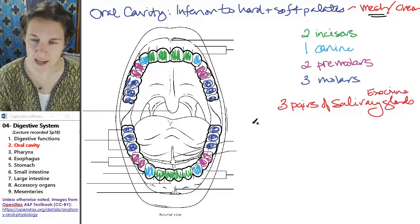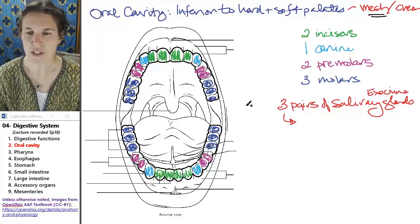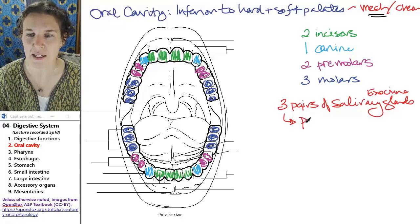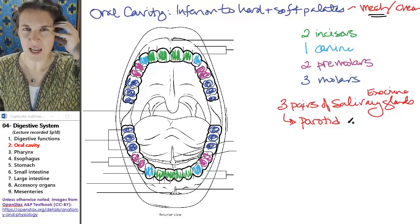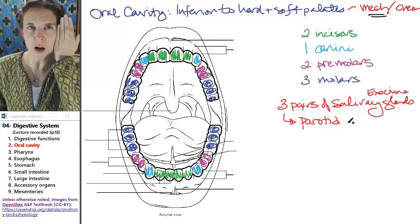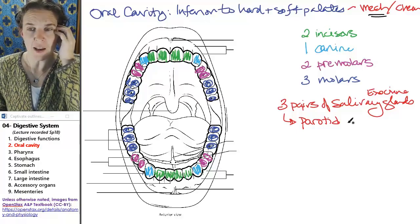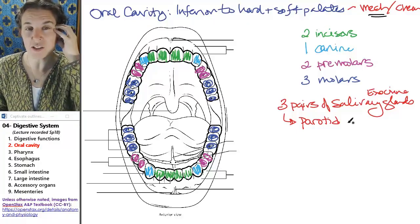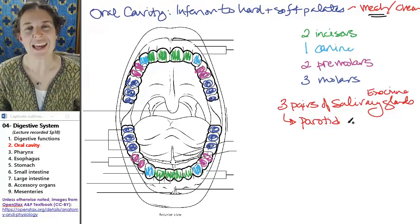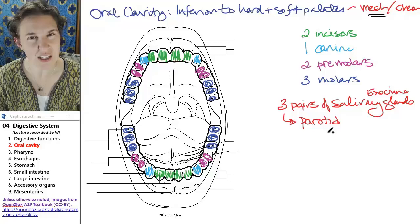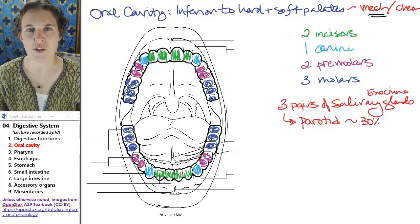And these exocrine glands come in pairs. So you have the parotid gland, and the parotid gland, para means near, and ot means ear. So the parotid glands are actually in front of the ear. It's the biggest salivary gland in your body, but it only produces about 30% of all of your saliva.